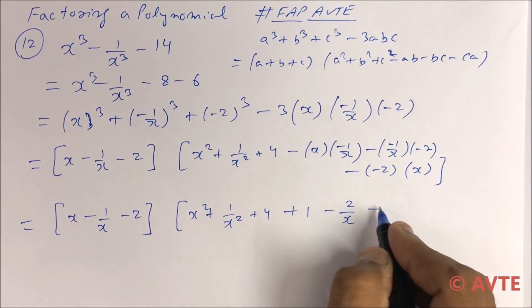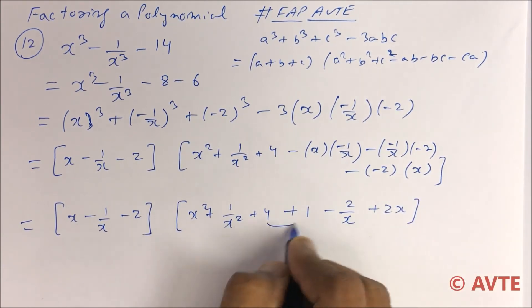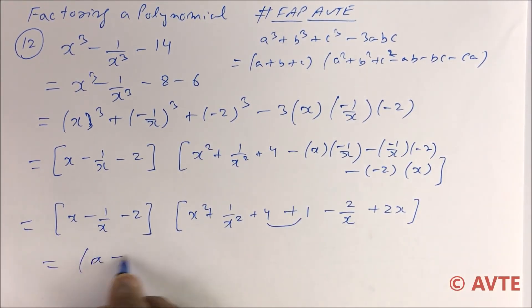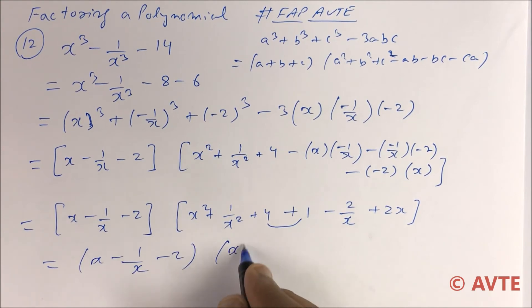-2/x and +2x. We can add them. The answer is (x - 1/x - 2)(x² + 1/x²